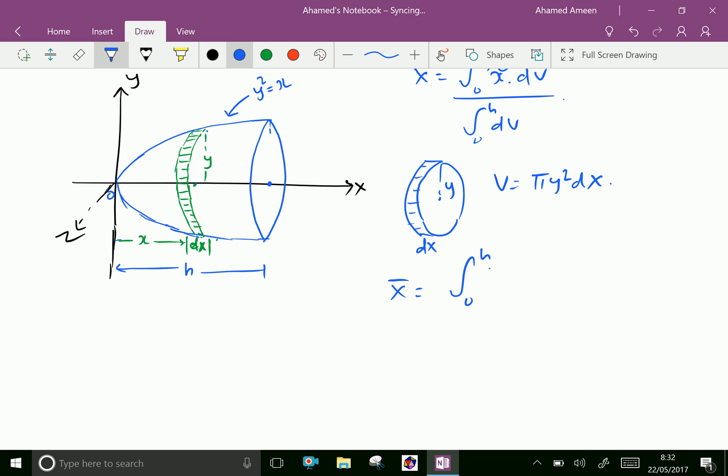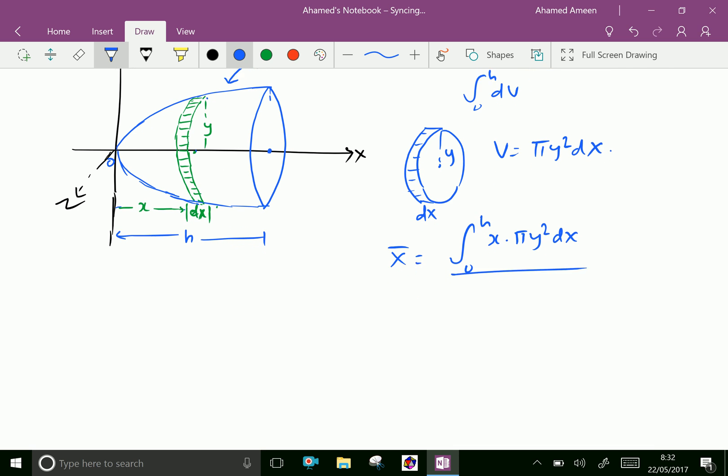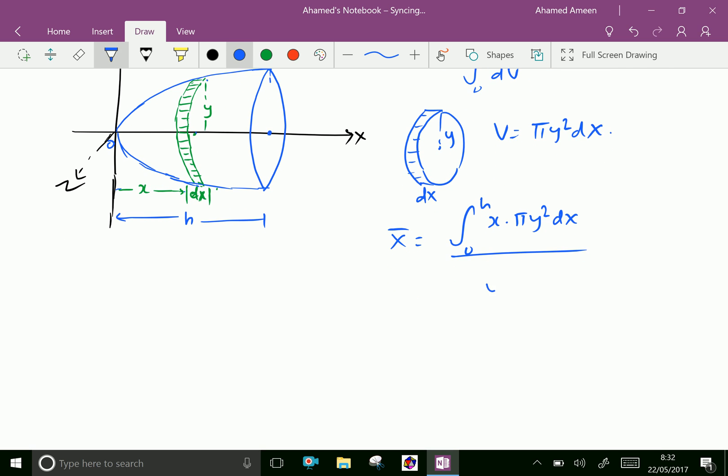So x̄ equals the integral from 0 to h of x times πy²dx divided by the integral from 0 to h of πy²dx.